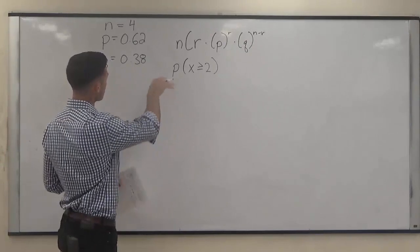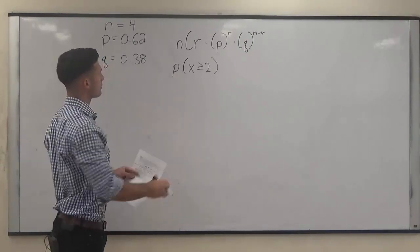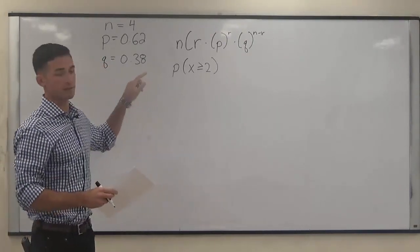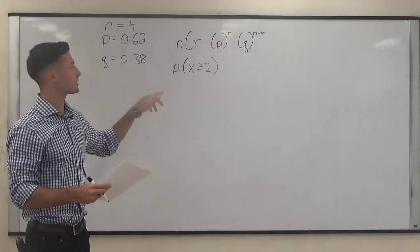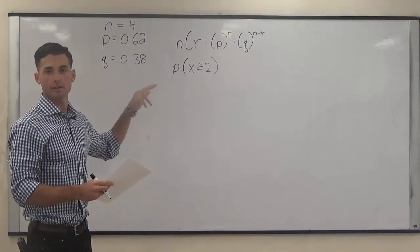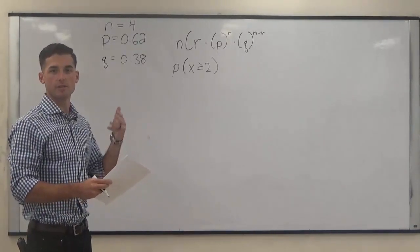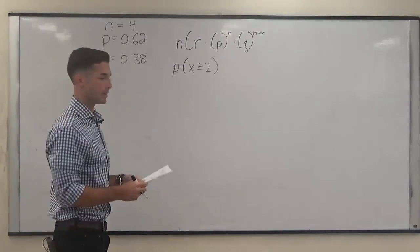So for this problem, you're going to list each of those scenarios: the probability of exactly two responding yes, the probability of exactly three responding yes, and the probability of exactly four responding yes. You're going to add those up at the end.